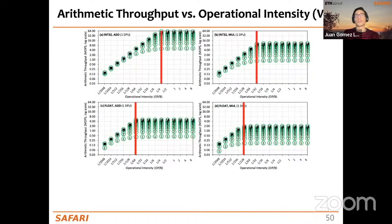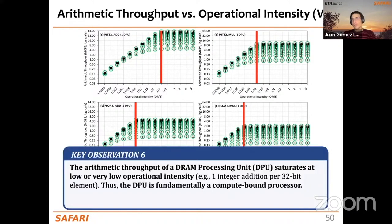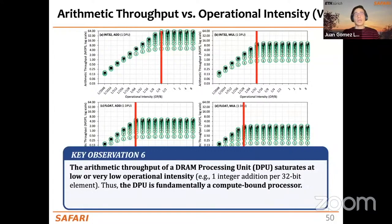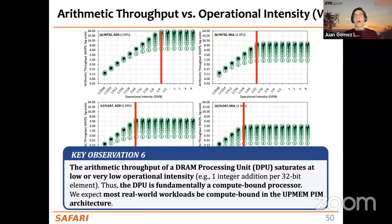The throughput saturation point is very low in all cases — even lower for multiplication or floating point operands. The fact that this saturation point is so low means we can expect most real-world workloads to be in the compute-bound area of this processor. We can therefore say that the UPMEM PIM architecture is fundamentally a compute-bound processor.